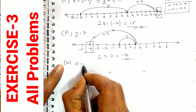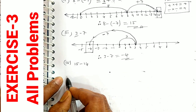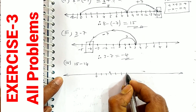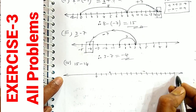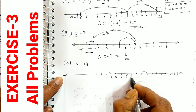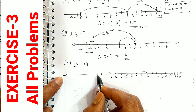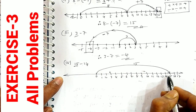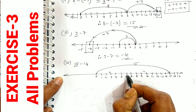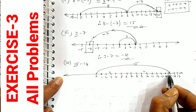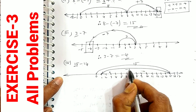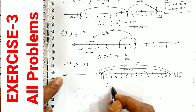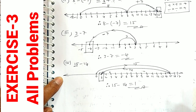Question number 4: 15 minus 14. On the number line from 0 to 17, we start at 15 and move 14 steps back. Moving back 14 numbers from 15 brings us to 1. Therefore, 15 minus 14 is equal to 1 is our answer.